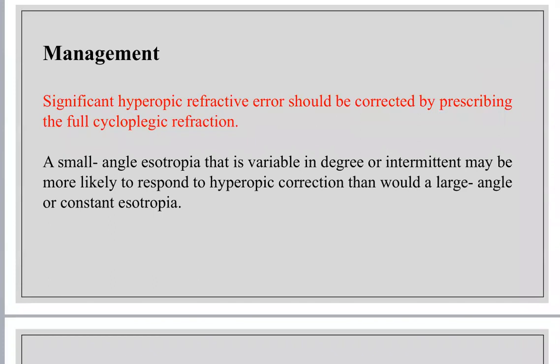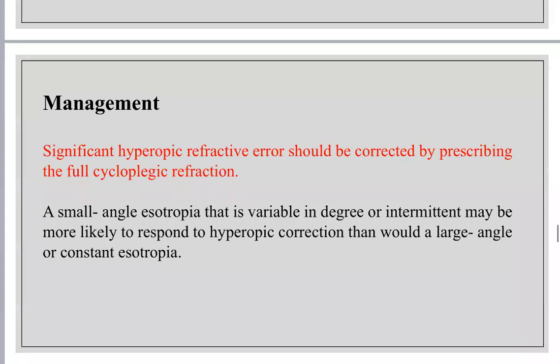For management, the first step is to correct refractive error with cycloplegic refraction, especially in hyperopic cases. Significant hyperopic refractive errors should be corrected by prescribing the full cycloplegic refraction. This won't correct infantile strabismus itself, but if there is an accommodative element, it must be treated before surgery.